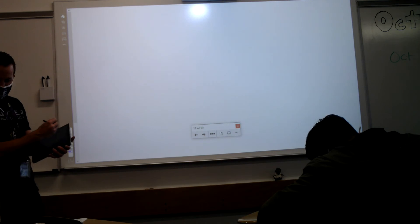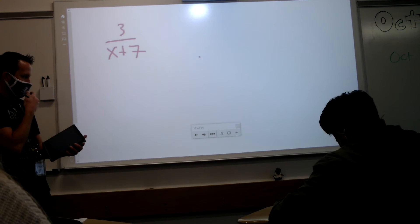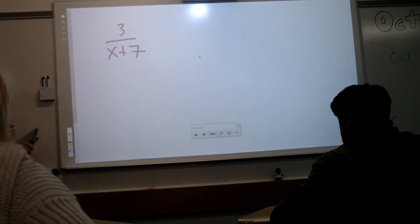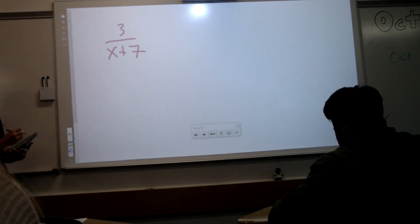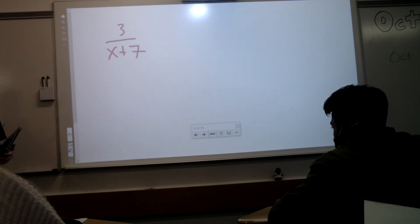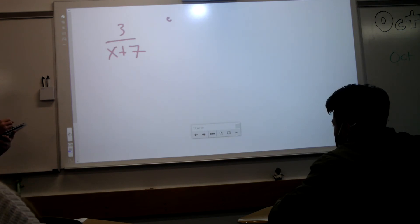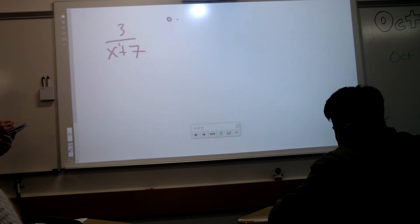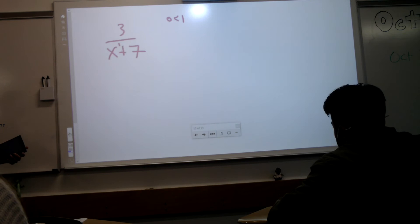The equation on this is just three over x plus seven. Okay. First off, let's talk about the end behavior asymptote. What is the degree of the numerator? How many x's are there? Zero, so the degree here is zero and the degree down here is one. Zero is less than one, so what does that tell you about your horizontal asymptote? Y equals zero. Good job.